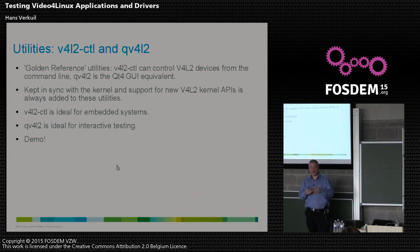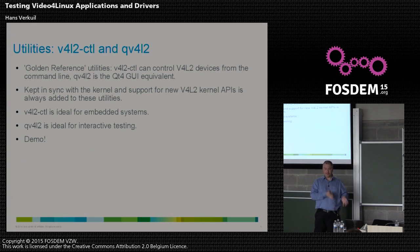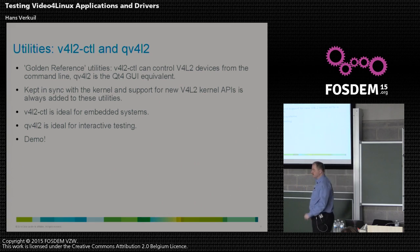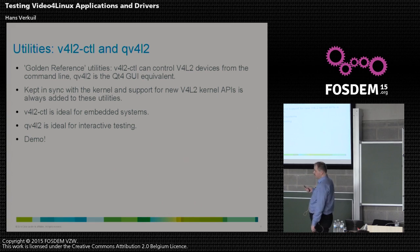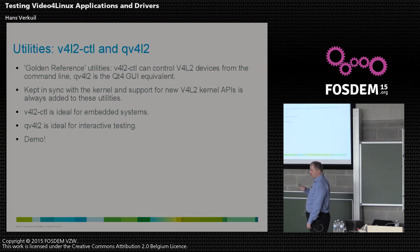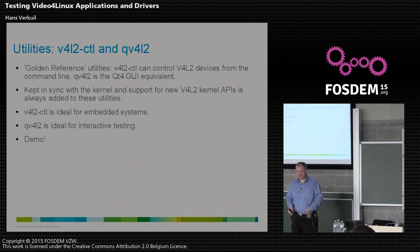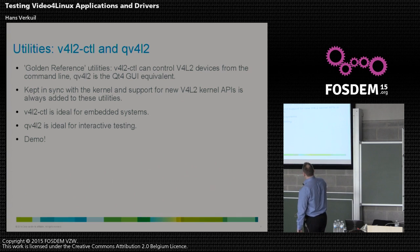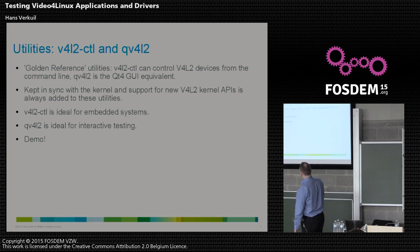On the application side you have two utilities — these are golden reference utilities that we keep up to date as we add new APIs. They're also intended to show best practices. The command line tool is ideal for testing things on embedded systems, while QV4L2 is ideal for interactive testing. When you start developing a driver, run V4L2-compliance as often as you can — it will keep you on track. Go through failures from top to bottom, process them one by one.